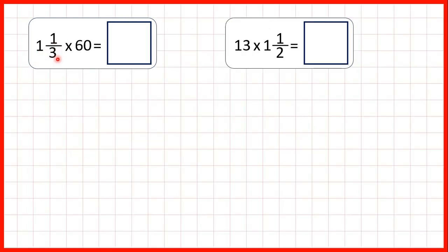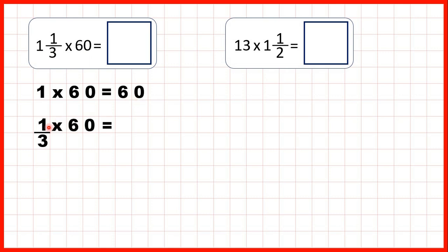Now 1 and 1 third times 60. We can follow the same steps: do 1 times 60, do 1 third times 60, and then add up our answers. So 1 times 60 is 60, and with 1 third times 60, we remember to only multiply the numerator by 60. So 1 times 60 is 60, the denominator stays the same, so we have 60 thirds. Remember, this is an improper fraction, but we can change it back into a mixed number by dividing.